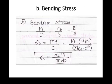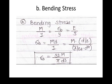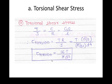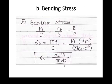The bending stress is developed due to the self weight of the helical gear. Using M/I = σ/y, where M is the bending moment evaluated from the free body diagram, Y = D/2, and I = π/64 · D⁴, after simplification we get σ_B = 32M / πD³.